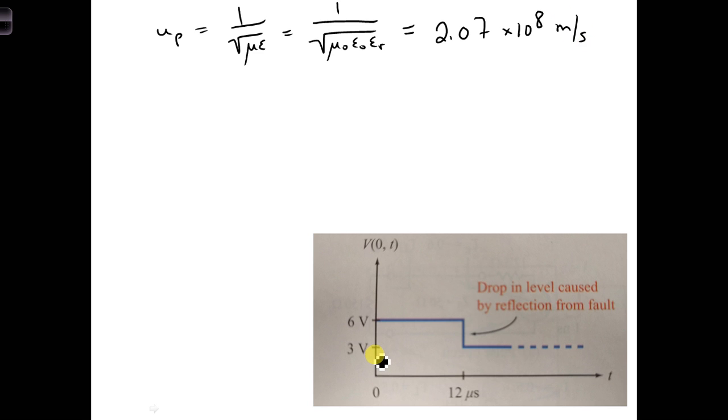According to the plot here on the bottom, the reflection reaches the generator after 12 microseconds.